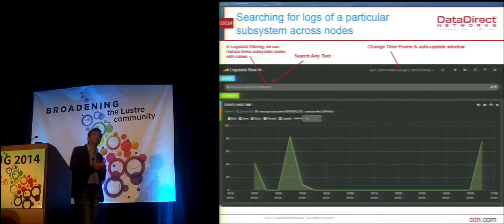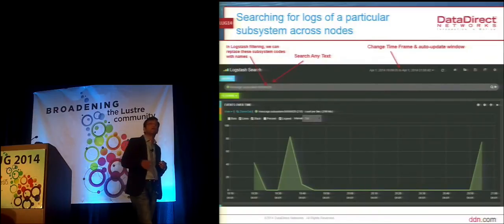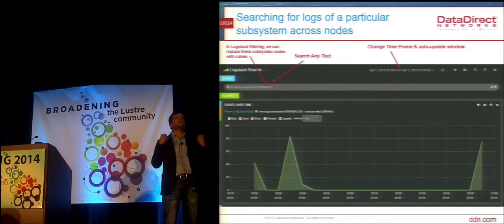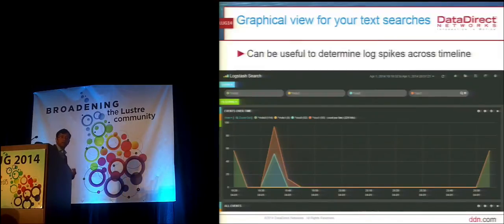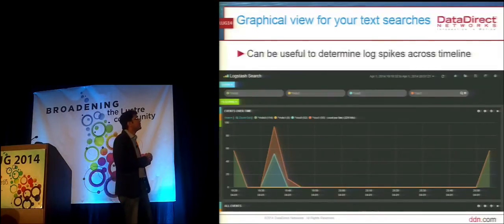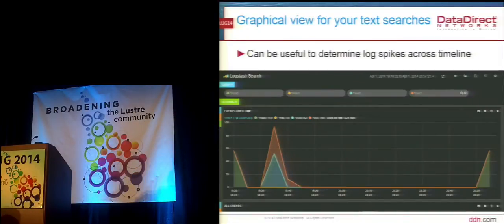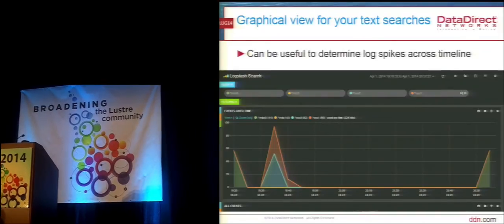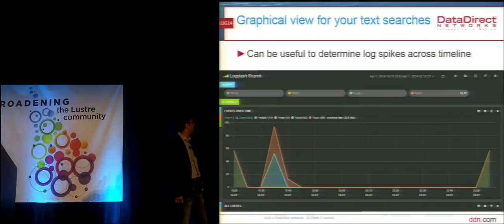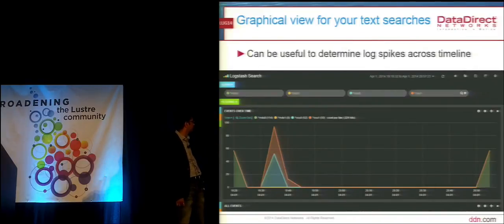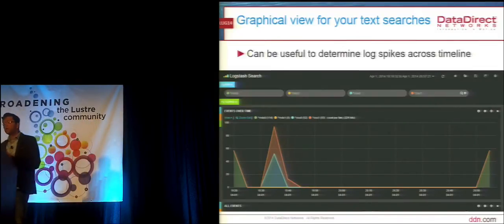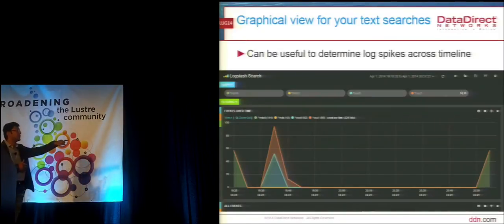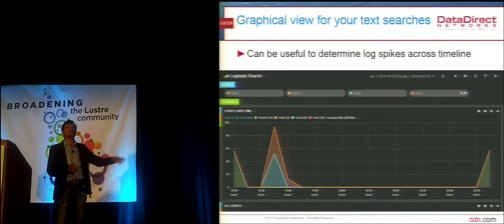You can also have a view to identify log spikes across a timeline. Here we're searching for MDS0, MDS1, OSS0, and OSS1, and it's plotting four lines, indicating there was a spike in OSS1 logs between 1930 and 1940 hours. That tells me something may have gone wrong on OSS1 during that duration — so maybe I want to click on that and see the log lines for that particular duration on OSS1.